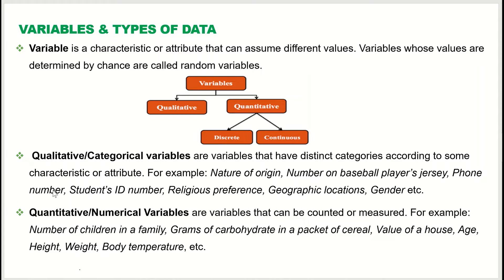Student ID number is a categorical variable. Religious preference — what religion you follow — is an example of a qualitative or categorical variable. Geographic location and gender are also qualitative or categorical variables. Using this information, data can be categorized or grouped — that is why they are called categorical variables.